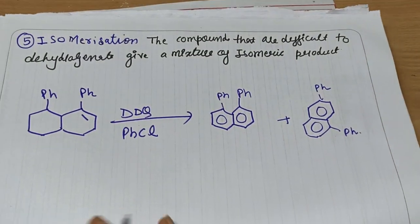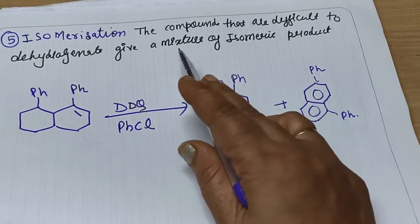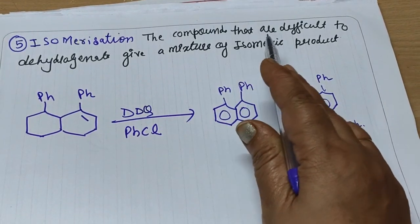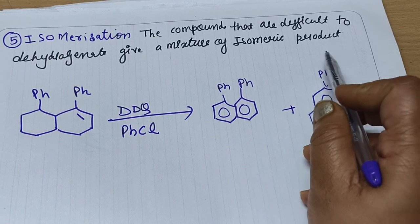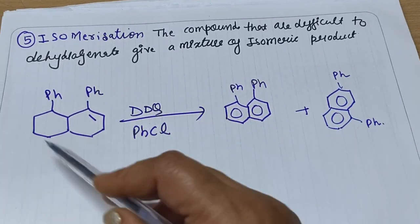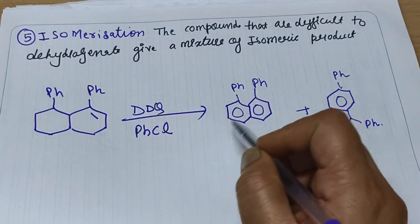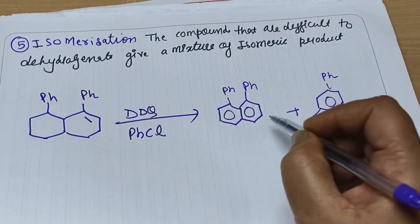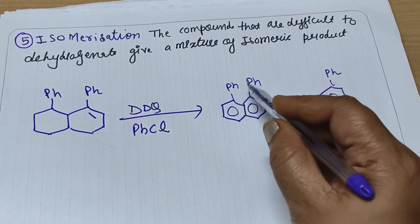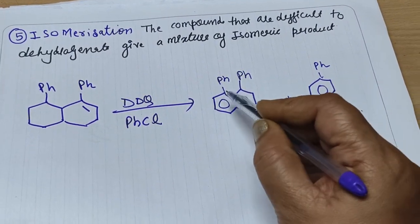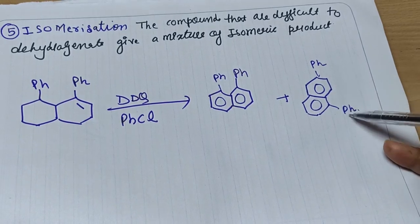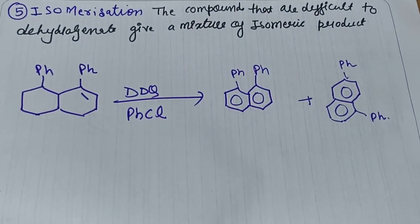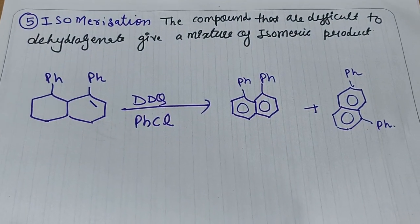The next application of DDQ is isomerization. Compounds which are difficult to dehydrogenate can give a mixture of isomeric products. For example, if two phenyl groups are close together, we can get transposition of the phenyl group, yielding a mixture of isomeric products.